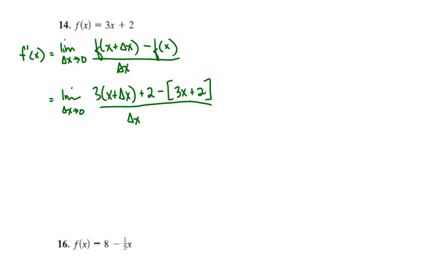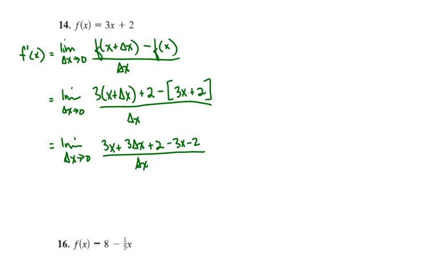All I need to do is expand everything out and apply the negative signs. I get the limit as delta x approaches 0 of 3x plus 3 delta x, distributing the 3, plus 2. Then I distribute the negative 1: negative 3x minus 2. Anything that doesn't have a delta x should go away — 3x and negative 3x, positive 2 and negative 2. That simply leaves me 3 delta x over delta x. The delta x's cancel, and that leaves just 3.